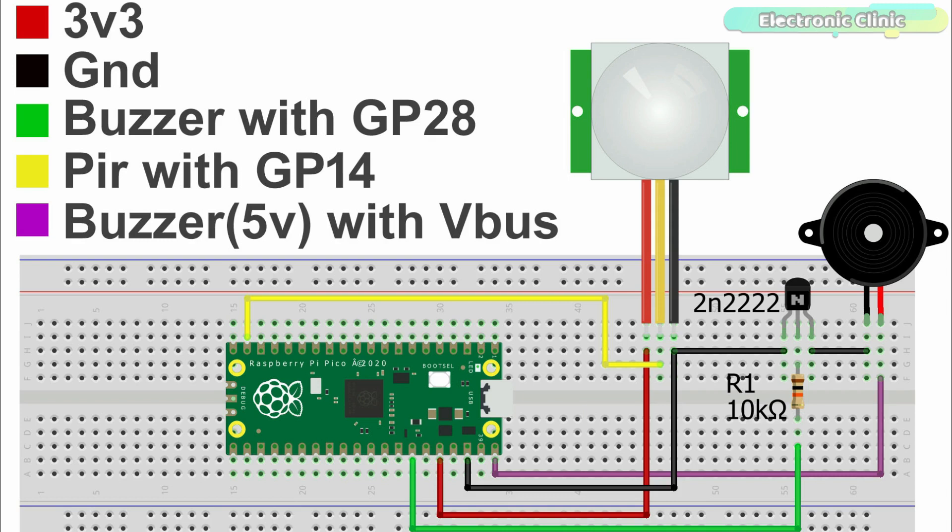The base of the transistor is connected with the GP28 pin of the Raspberry Pi Pico board. So that's all about the connections.